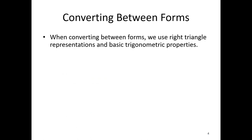One of the big things we're going to need to do with these vectors is convert between forms — so we may have a magnitude and direction and want the components, or we may have the components and want the overall magnitude and direction. When converting between forms, we're going to use right triangles and basic trigonometry.